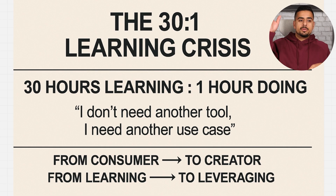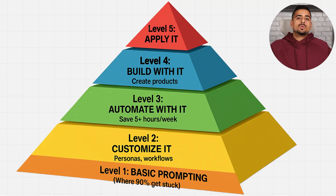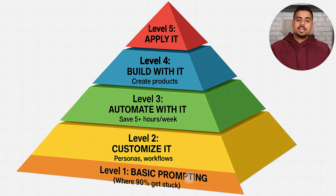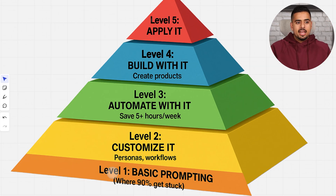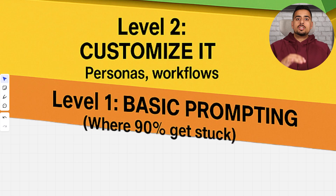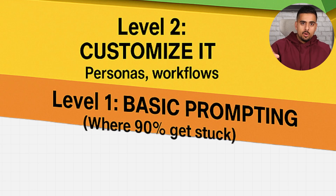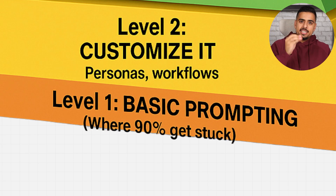My goal with this video is that you go from consumer to creator, and from learning to leveraging. This is essentially the way I think about the learning pyramid: level one is basic prompting, to intermediate prompting, to advanced prompting. All roads always lead back to prompt engineering — whether you're going to vibe code, create AI images, or AI videos, you're always going to need this skill. This is the foundation of everything.